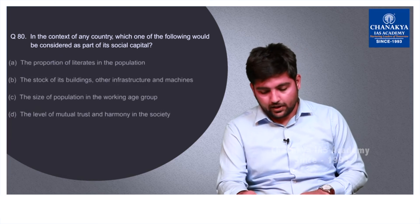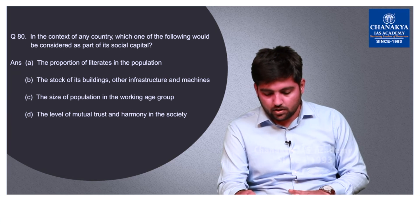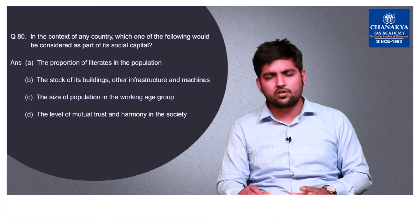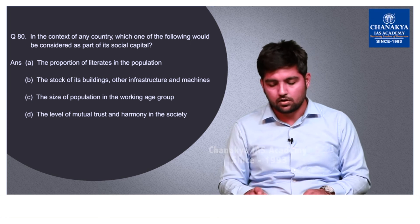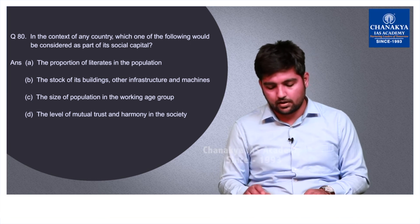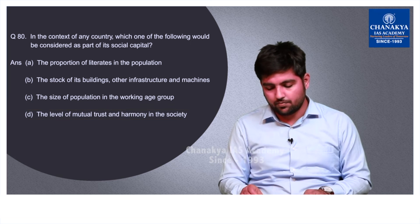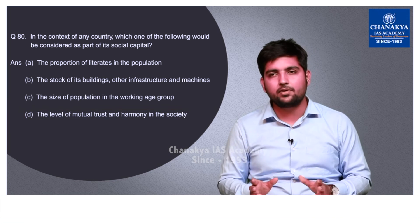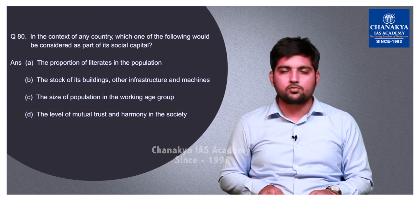Question number 80 asks which one of the following would be considered a part of a country's social capital. This is a simple conceptual question. The answer is D — the level of mutual trust and harmony in the society — which can be summarized as social capital. The correct option is D.